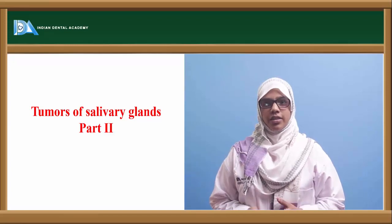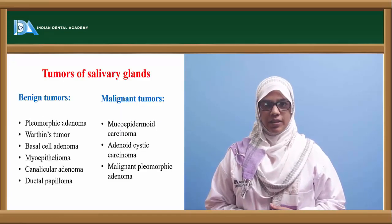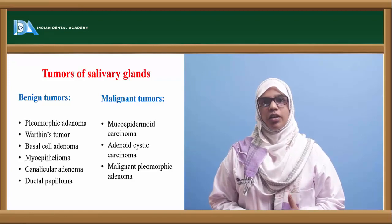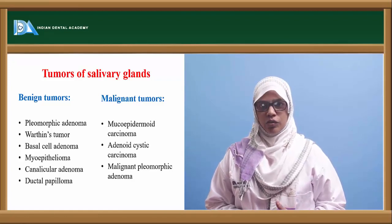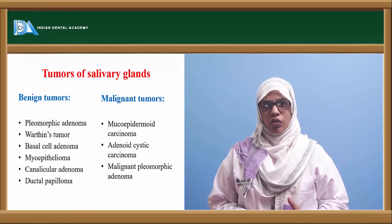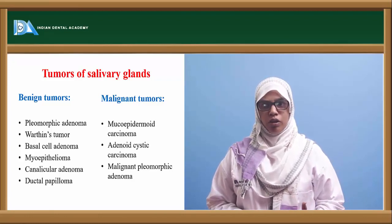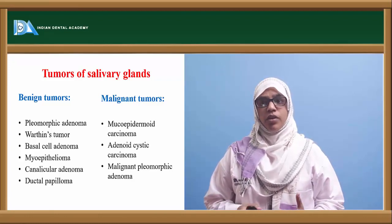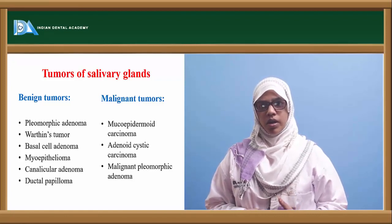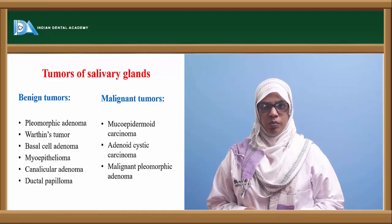In this session, I'm going to discuss tumours of salivary glands. Salivary gland tumours can be broadly divided into benign tumours and malignant tumours. Benign tumours include pleomorphic adenoma, Warthin's tumour, basal cell adenoma, and myoepithelioma. Whereas malignant tumours include mucoepidermoid carcinoma, adenoid cystic carcinoma, and malignant pleomorphic adenoma.